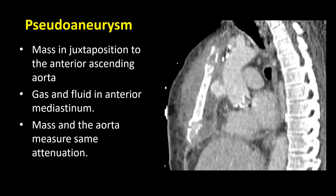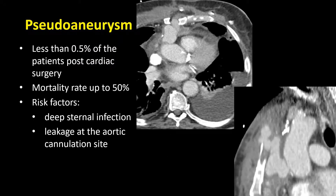Here is another image of the same pseudoaneurysm in sagittal reconstruction. If you're unclear on the transaxials, reconstructions can be extremely helpful. We see this very narrow neck with a large outpouching, unlike the chimney remnant which is well demarcated and very focal. This is a very typical appearance of a pseudoaneurysm. In this patient, because of the associated gas, fluid, and sternal dehiscence with underlying infection, the decision was made to try to treat the patient with antibiotics before proceeding to repair.